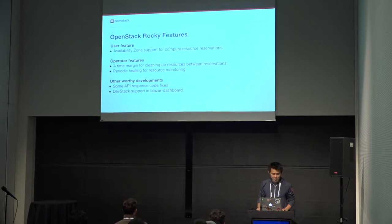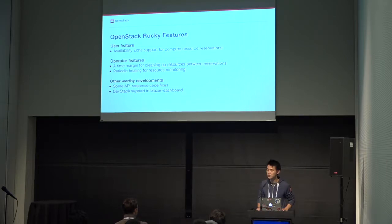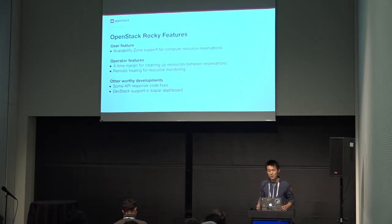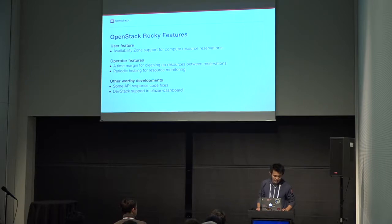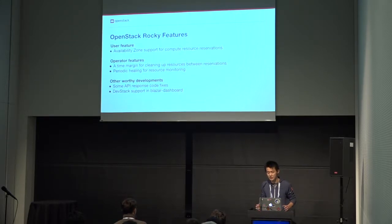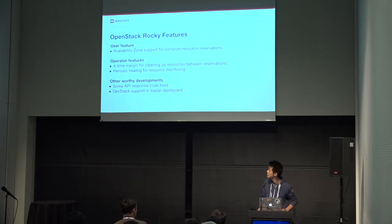Another notable development: Blazar fixed some API response codes in the Rocky cycle, because some API response codes were not appropriate for every reason of failure — and we fixed these problems. The second new development is dev support in the Blazar dashboard, so when you test Blazar locally, you can easily test features from the CLI as well as from the dashboard — meaning Horizon. Next is our plan for the Stein cycle, so let's switch to the PTL.